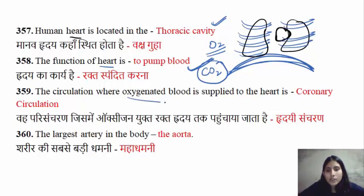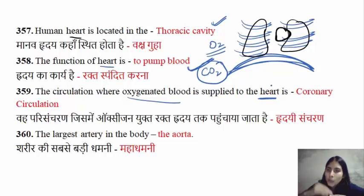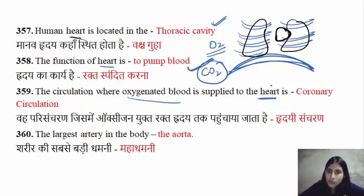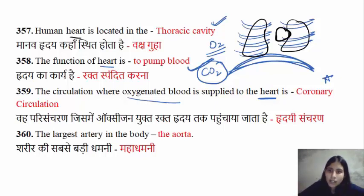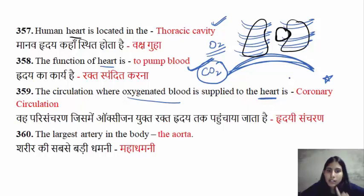The circulation where oxygenated blood is supplied to the heart is known as coronary circulation. This is an important question. You will also have pulmonary circulation and systemic circulation. One more is present which is coronary circulation.